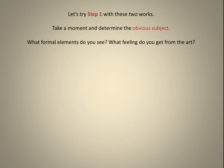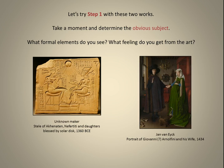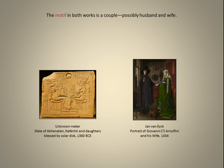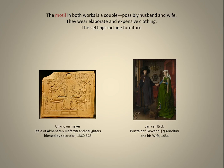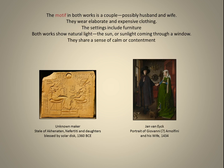Let's try Step 1 with these two works. Take a moment and determine the obvious subject. What formal elements do you see? What feeling do you get from the art? The motif in both works is a couple, possibly husband and wife. They wear elaborate and expensive clothing. The settings include furniture. Both works show natural light — the sun or sunlight coming through a window — and they share a sense of calm or contentment.